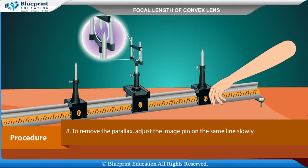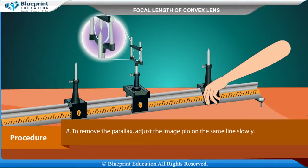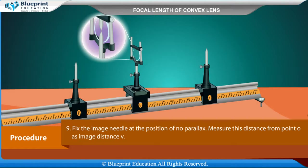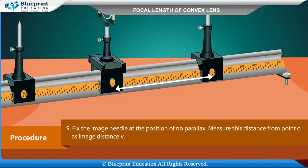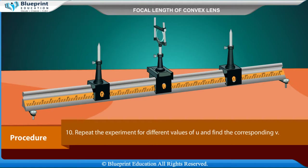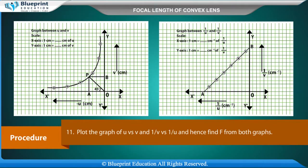To remove the parallax, slowly adjust the image pin along the same line until there is no parallax. Fix the image needle at the position of no parallax and measure this distance from point O as image distance V. Repeat the experiment for different values of U and find the corresponding V. Plot the graph of U versus V and 1/V versus 1/U, and find F from both graphs.